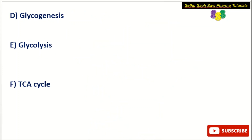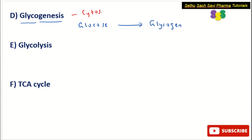Choice C: glycogenesis. Genesis means synthesis and glyco means glycogen, so glycogen will be synthesized from glucose. The conversion of glucose to glycogen, or the synthesis of glycogen from glucose, is called glycogenesis. This process happens in the cytosol or cytoplasm, mainly in the cytoplasm of the liver and skeletal muscles.